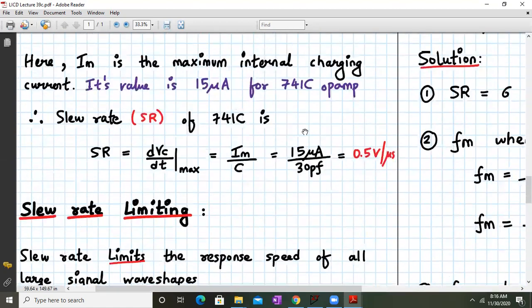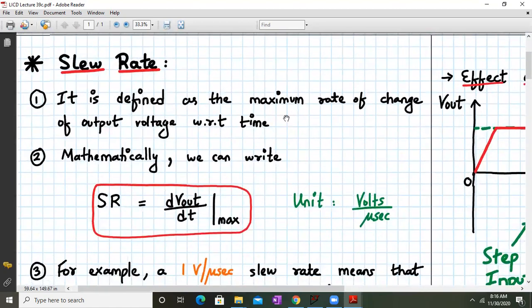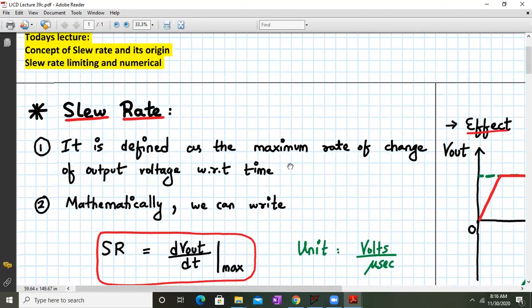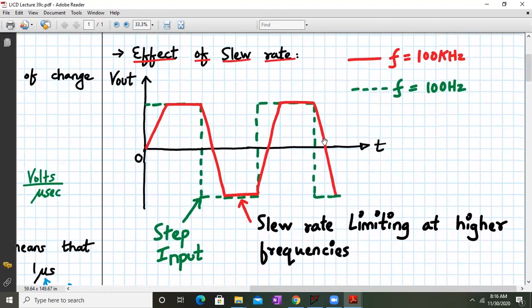So I think we have come to the conclusion of the lecture. And we have seen what is slew rate. We have also seen its origin. Then we have seen the concept of slew rate limiting. And we have also demonstrated that in LTSpice. And then we have solved two numericals on the slew rate based on the slew rate limiting and the overall formula. So I think that's it for today's lecture. Next time we'll start with a new topic. Until then, have a good day and thank you.